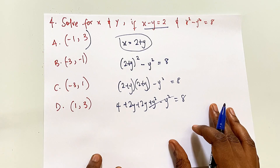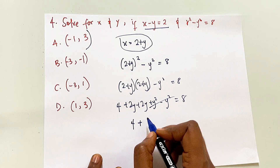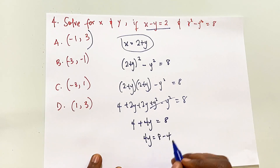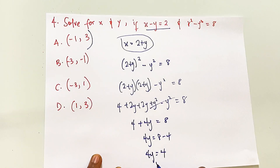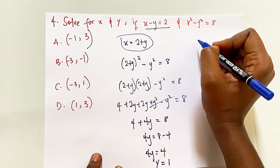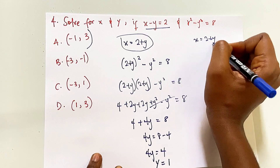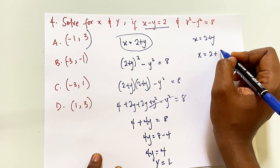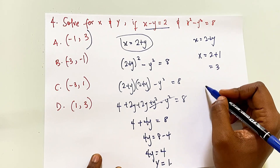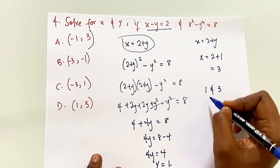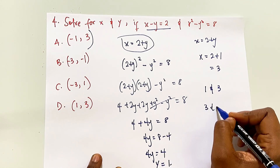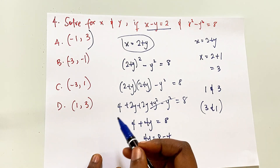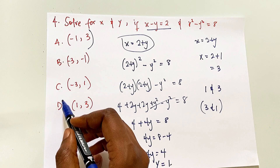The y² terms cancel, leaving 4 + 4y = 8. So 4y = 8 - 4 = 4, meaning y = 1. Since x = 2 + y, substituting y = 1 gives x = 2 + 1 = 3. So x = 3 and y = 1. The answer is D.